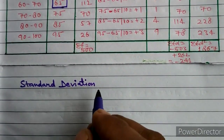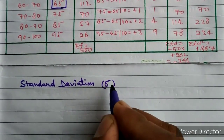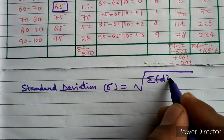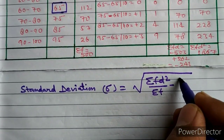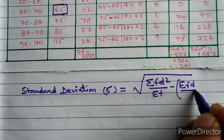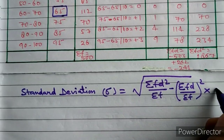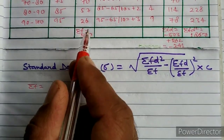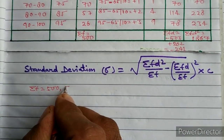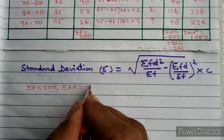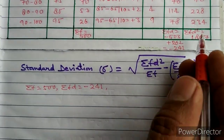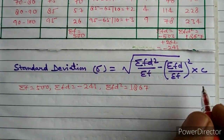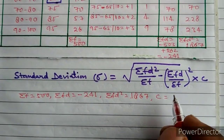Now finally we calculate the standard deviation by applying the formula: sigma equals under root of [sigma fd² upon sigma f] minus [sigma fd upon sigma f] whole squared, into c. From the table: sigma f is 500, sigma fd is minus 241, sigma fd² is 1867, and c is the class width, which is 10.